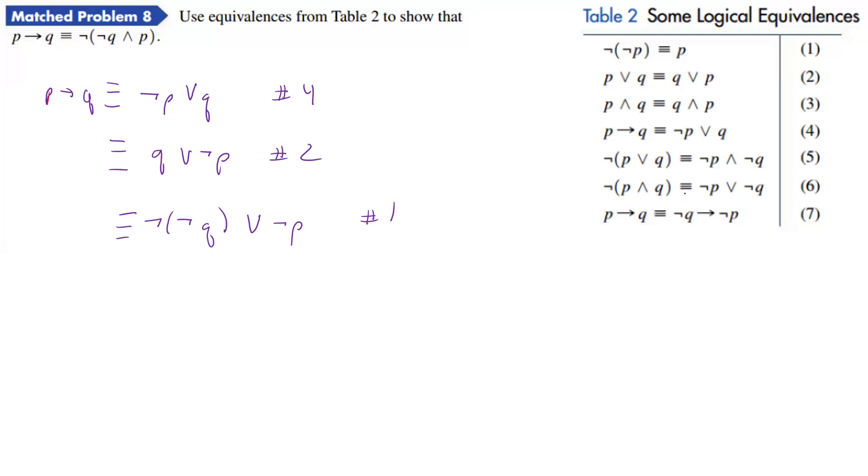So if we have the nots individually on each side, we can bring them out front here, it looks like. And so using number six, we can take out this not and this not and have it out front. And then we're left with a not Q or P, and that's with number six.